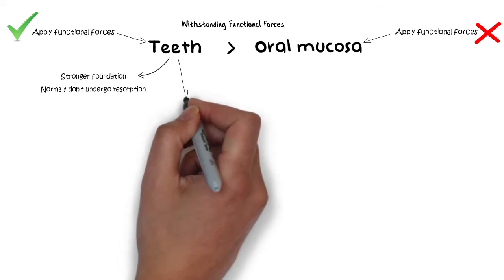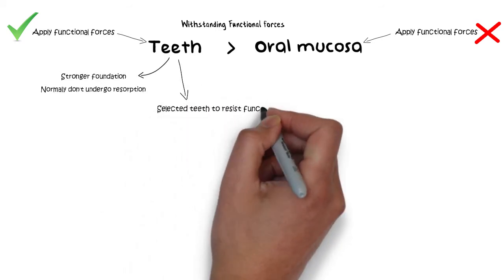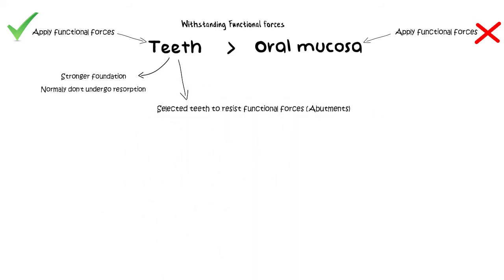Therefore, appropriate use of selected teeth for helping to resist the functional forces in the prosthesis is a very critical strategy to control the functional movement and in achieving functional stability. And as we also know, these selected teeth are known as abutments.